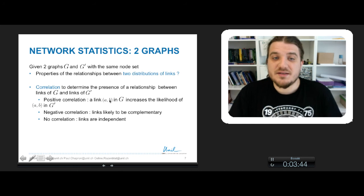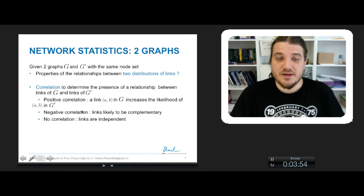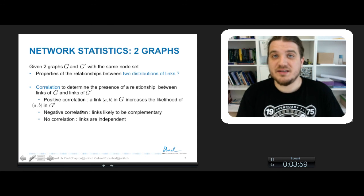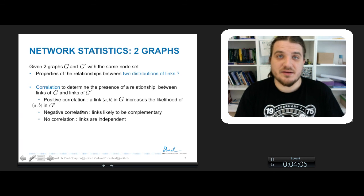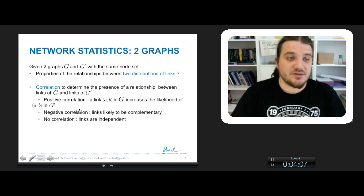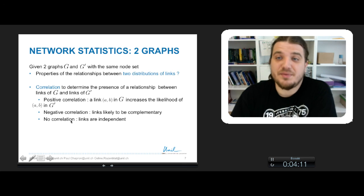A negative correlation will imply that the links may be complementary, so the presence of links AB in G implies that the link between A and B is absent of the network G' and in case of no correlation, the links will be independent.